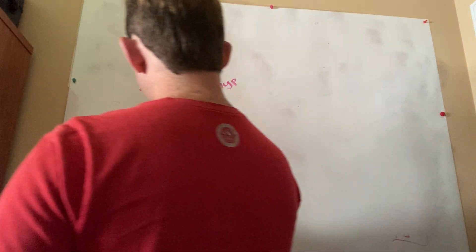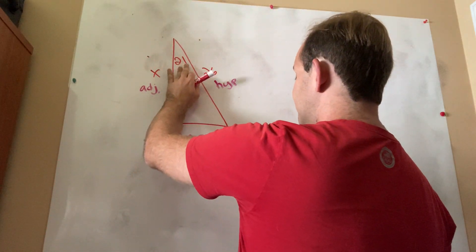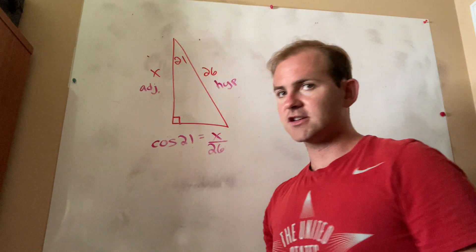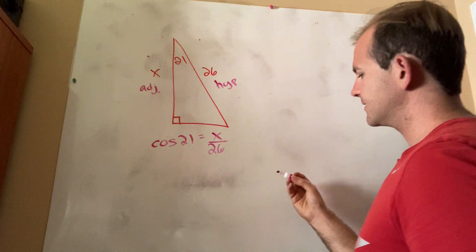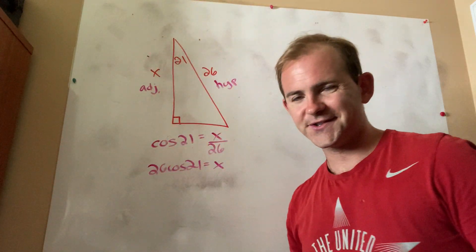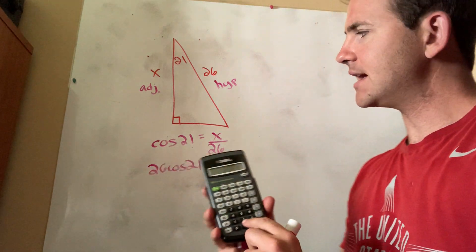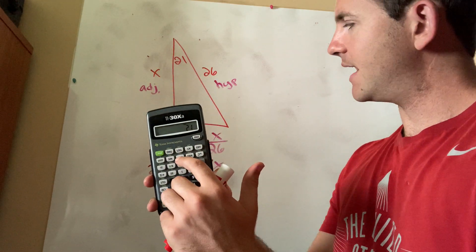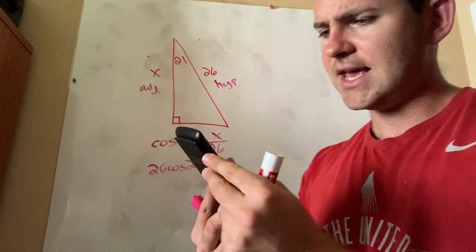So I'm going to set up an equation. Cos, which stands for cosine, 21, right, the angle is what gets plugged into the cosine function, equals adjacent over hypotenuse. So here's my equation. How do I get rid of a divided 26? I multiply both sides by 26, and thus I get 26 cos 21 equals X. Let's go over one more time how to do this on the calculator. First type in the angle, so I'm going to type in 21. Then I'm going to hit the cosine key. It's labeled cos. Then I'm going to multiply by 26. So times 26 equals, and I get this.